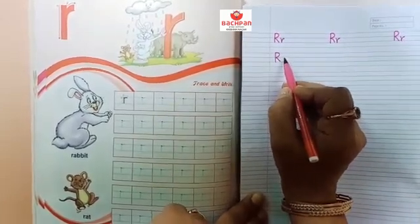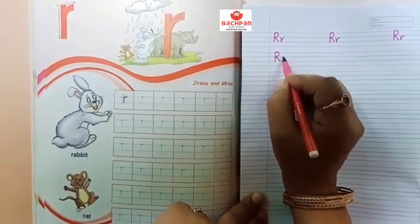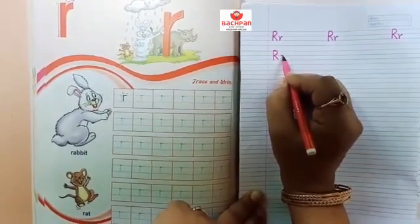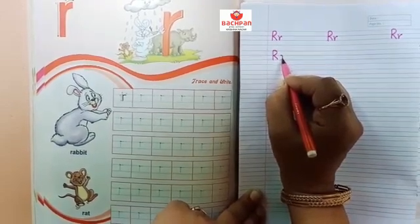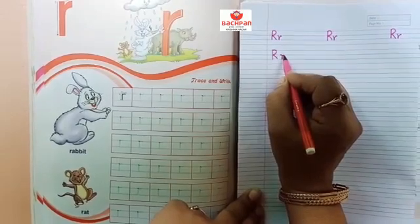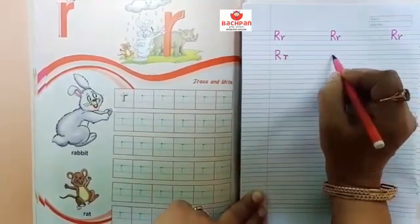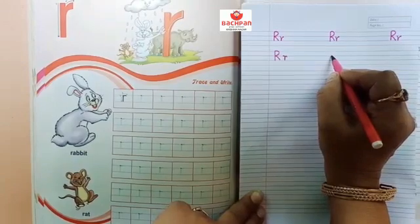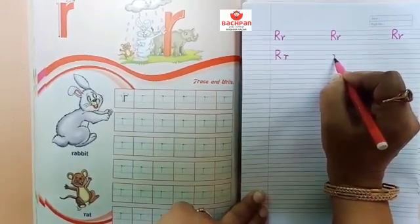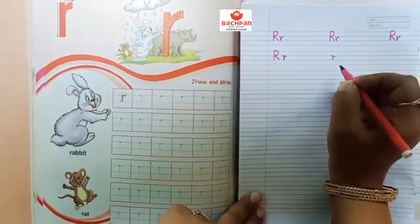For small r we use two middle lines. Make a small curve, then make a small standing line till the black line. After that make one more small curve. This is small r. Once again: make a small curve, then the small standing line, after that one more small curve. This is small r.